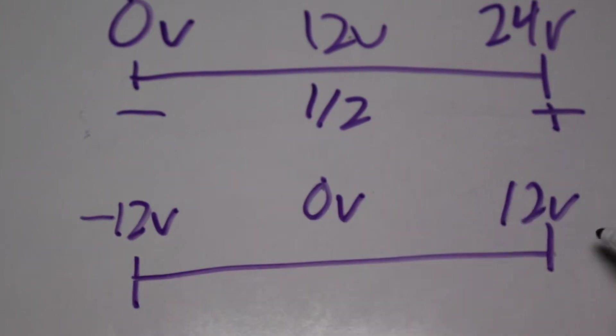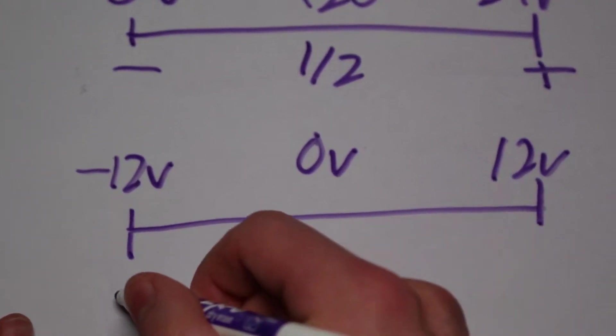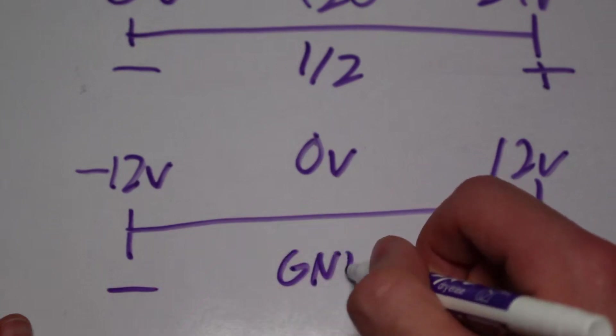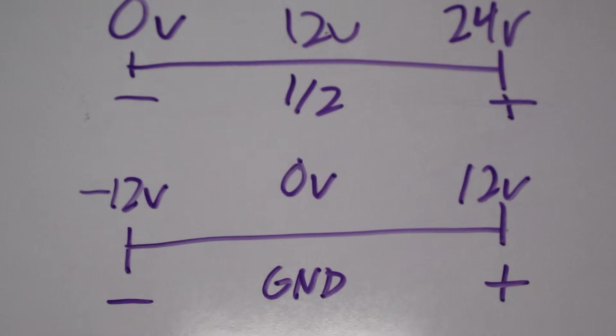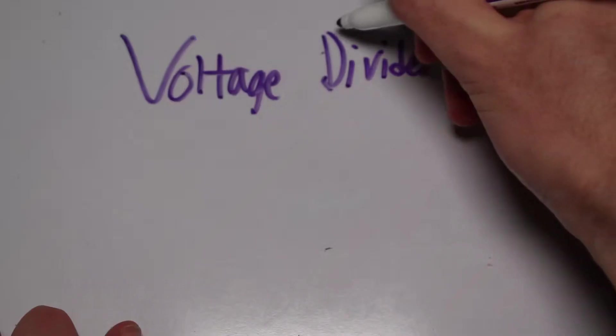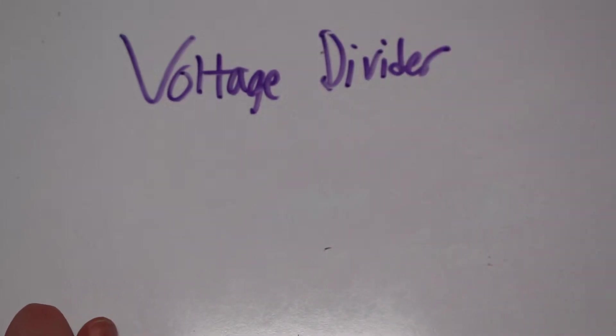This new ground that we just created can be called a virtual ground. Just remember this, voltage is relative. Anyways, we just need a way to generate the 12 volts from the 24 volts that we currently have. The simplest method, which some of you might have already come up with, is a simple voltage divider.